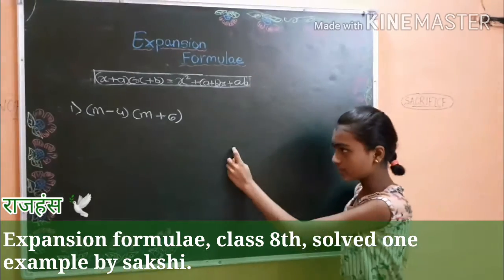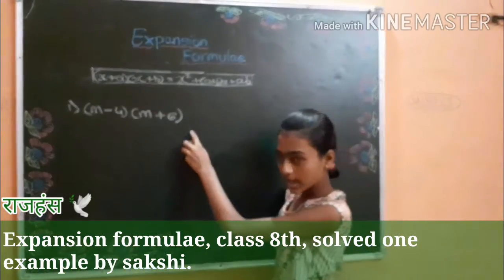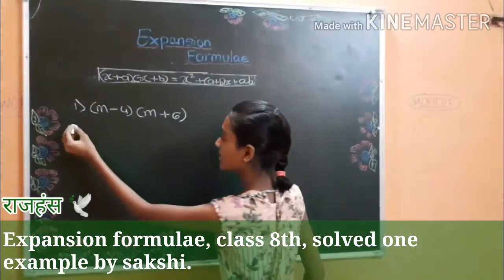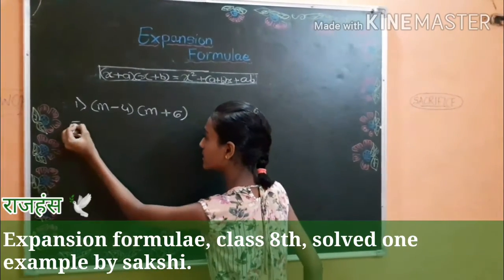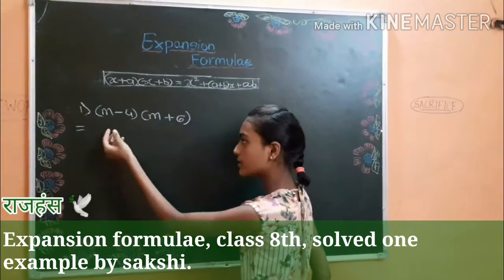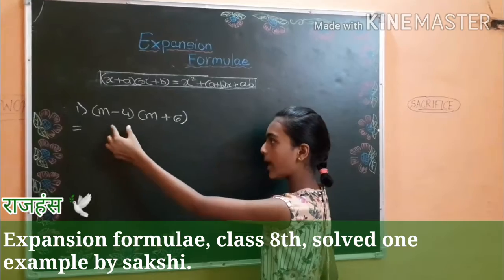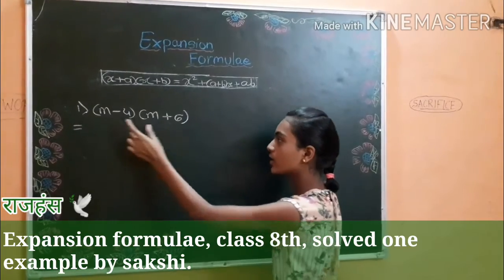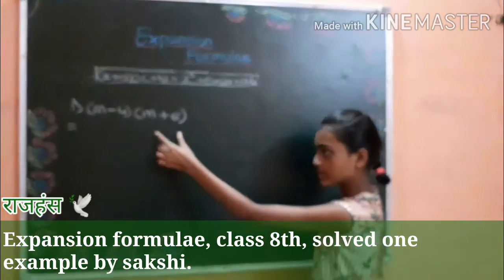So let's solve. This is one example. First, multiply m minus 4 to m plus 6.